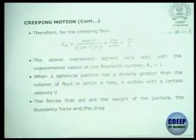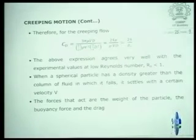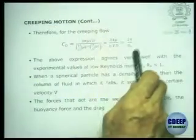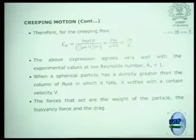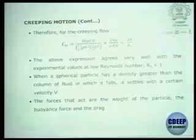This expression has been verified experimentally by many researchers, and excellent agreement is found between predicted and experimental values. This is what is called the Stokes range — strictly Reynolds number less than 1, preferably 0.1. Experiments show that even up to Re = 1 this relationship holds, but if it exceeds 1 — say 2, 3, 4, or 10 — do not apply this formula; it is no longer valid.